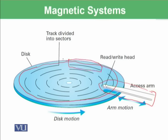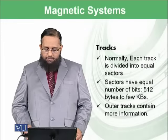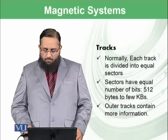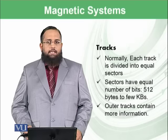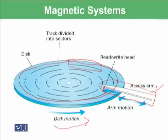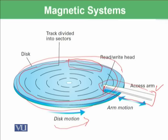Data is read by the access arm, which also has a read-write head, and the disk moves in a circular direction. Each track is divided into equal sectors, and sectors have an equal number of bits — about 512 bytes to a few kilobytes are contained in each sector. Outer tracks contain more information because they are comparatively larger in area.